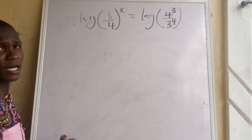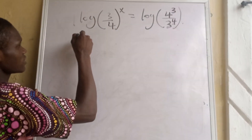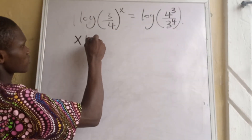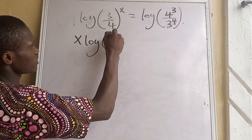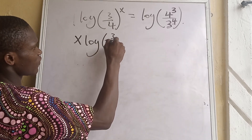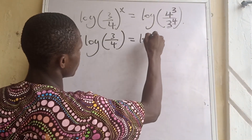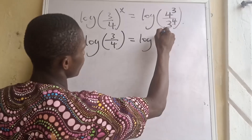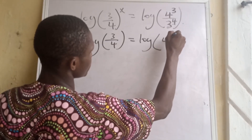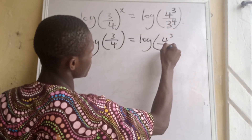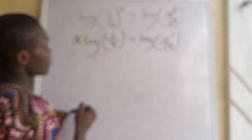Applying the principle of indices for logarithms, the exponent x comes to the front. So we have: x times log(3/4) equals log of 4^3 all over 3^4.